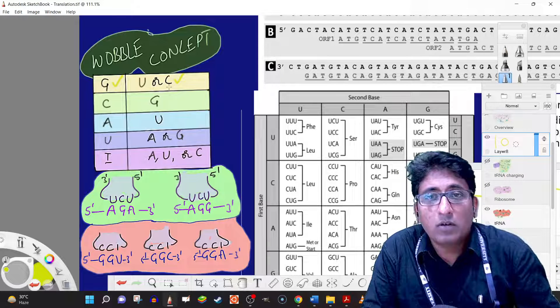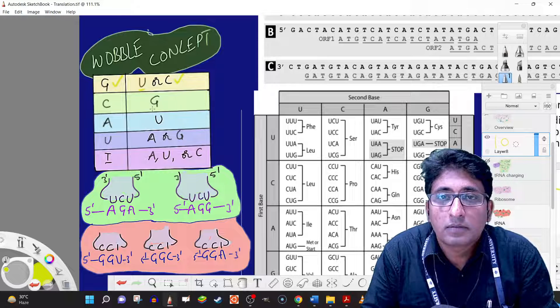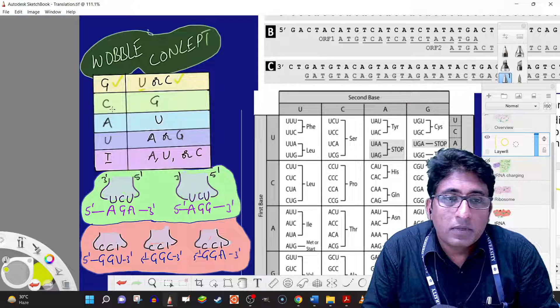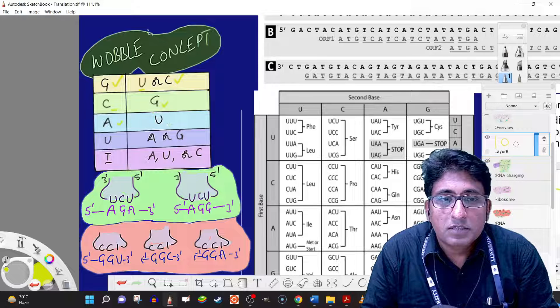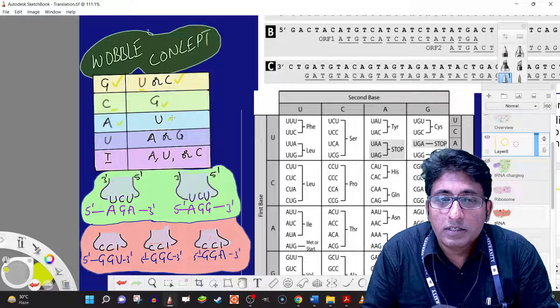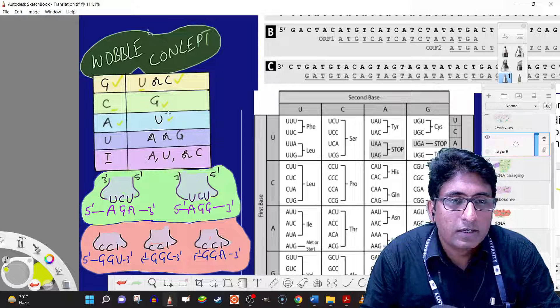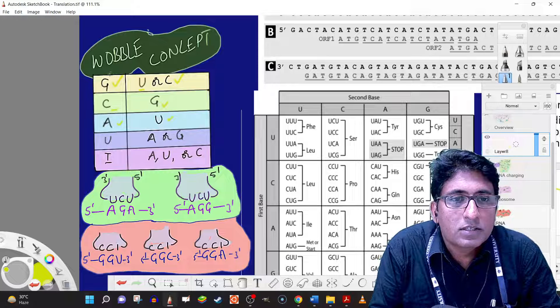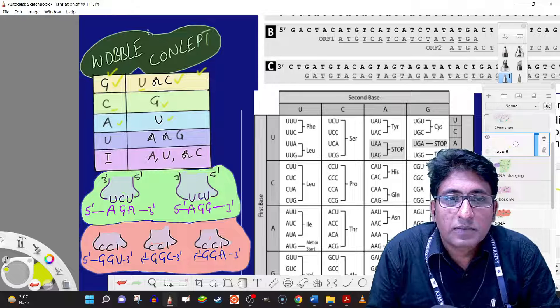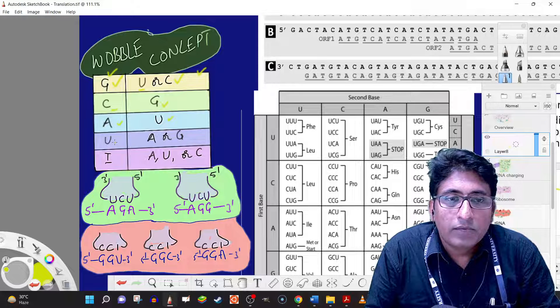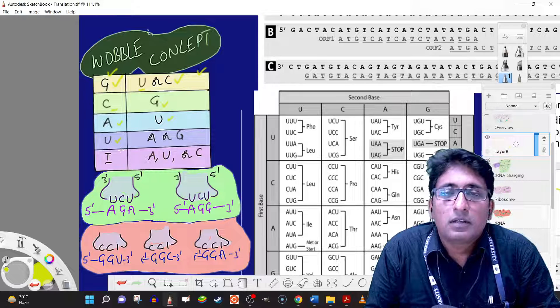But G can also base pair with uracil. Similarly, C can base pair only with G, and A can base pair only with U. This is about the codon-anticodon interaction.